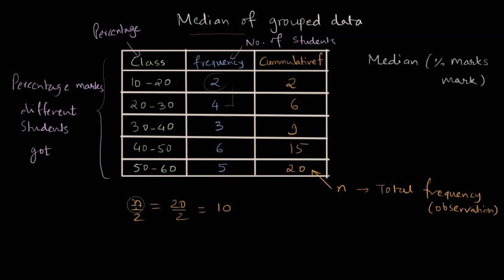Because n by two is 10, we want to isolate the class where the number of observations or the cumulative frequency reaches above 10. We have to find a cumulative frequency in the table which becomes greater than n by two. For the first class, cumulative frequency is two, then it's six, then it's nine. When the CF is 15, it becomes greater than n by two for the first time, and that happens for this 40 to 50 class.